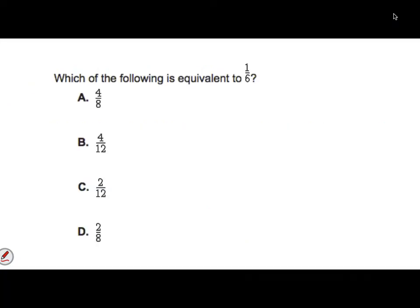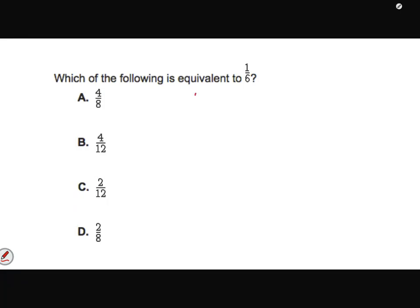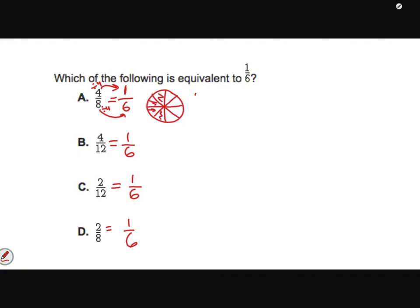Pause the video and try this one. Which of the following is equivalent to one-sixth? You could draw, but drawing isn't always precise. If I think about four-eighths and one-sixth — to go from 4 to 1 in the numerator I'd divide by 4, but 8 divided by 4 is not 6, so these don't match. If I draw it out, four-eighths is way bigger than one-sixth. So option A is incorrect.